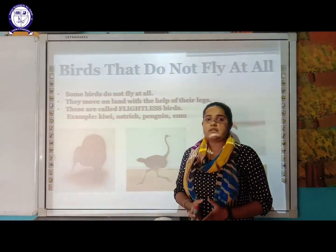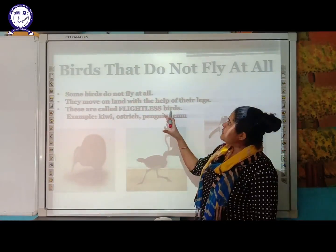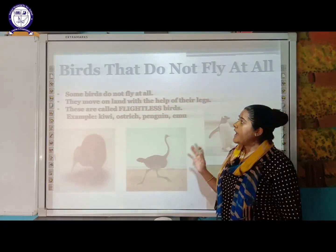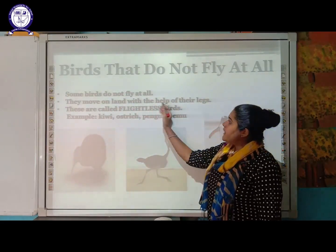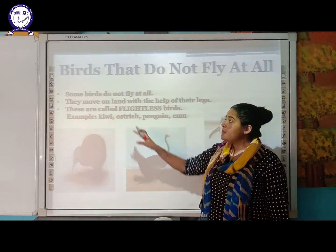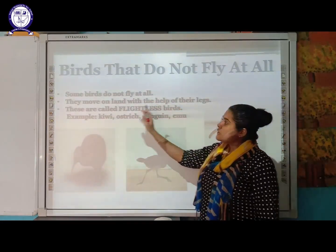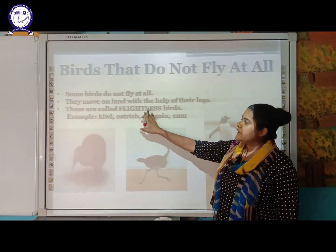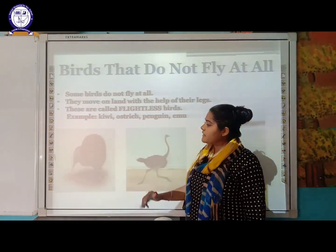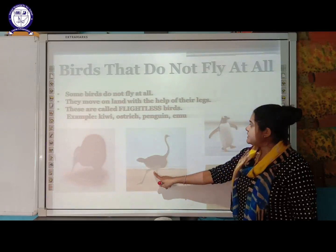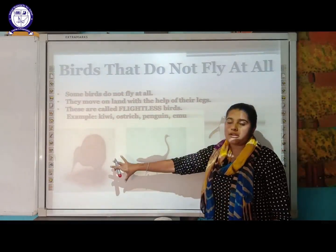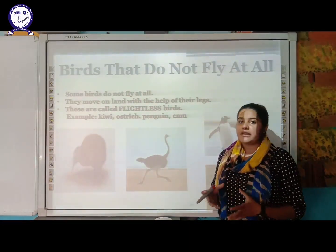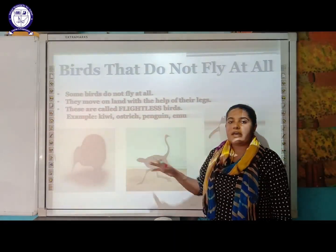Not all birds can fly. There are birds that do not fly at all; they move on land with the help of their legs. These are called flightless birds. Examples of flightless birds are kiwi, ostrich, penguin, and emu — their wings are not strong enough to fly.